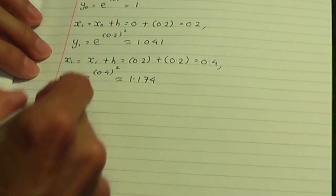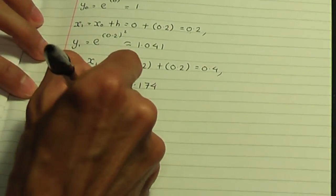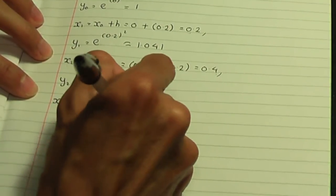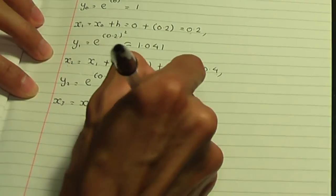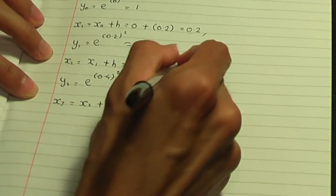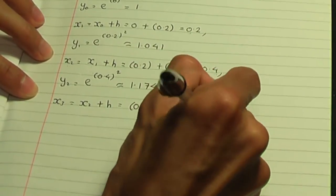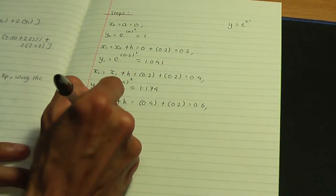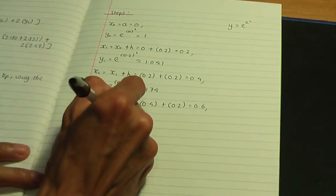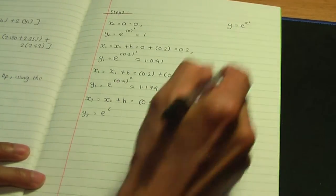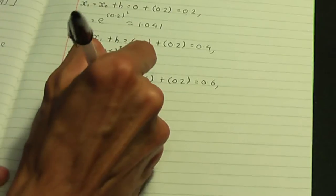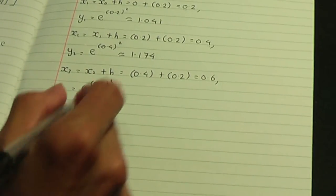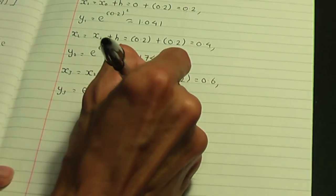Let's work out x3: x3 equals x2 plus h, so 0.4 plus 0.2 gives 0.6. The corresponding y value, y3, equals e to the power of 0.6 squared, which works out to be 1.433.